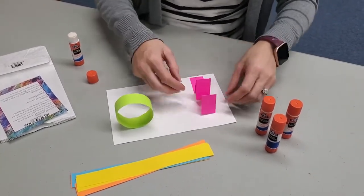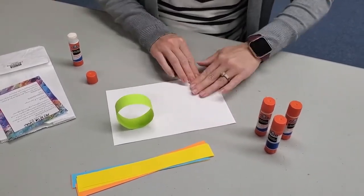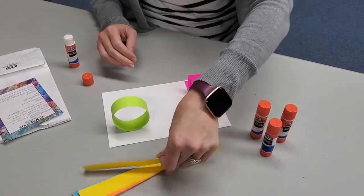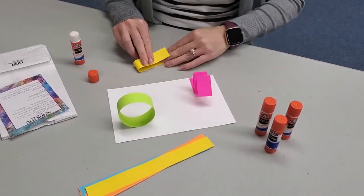And you can either glue it down or just let it be loose. You can make a triangle.